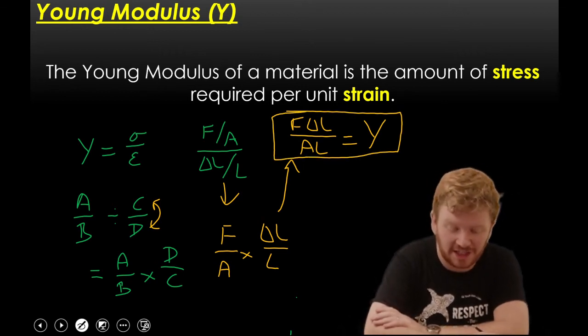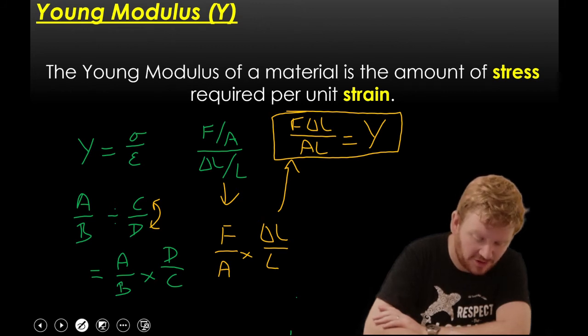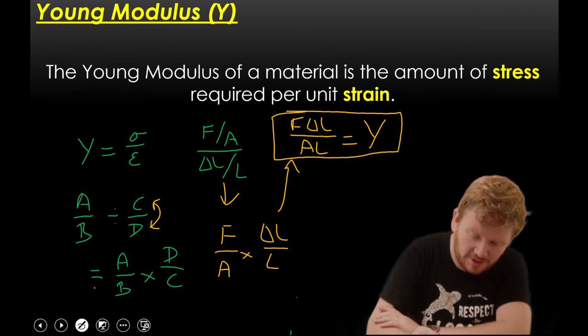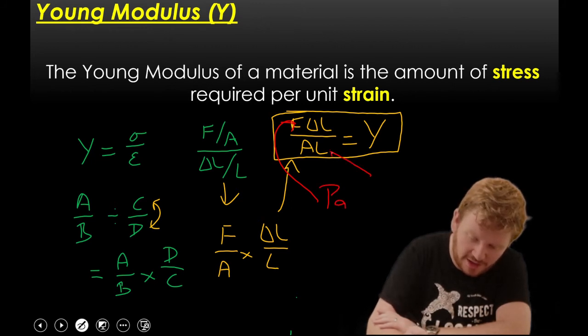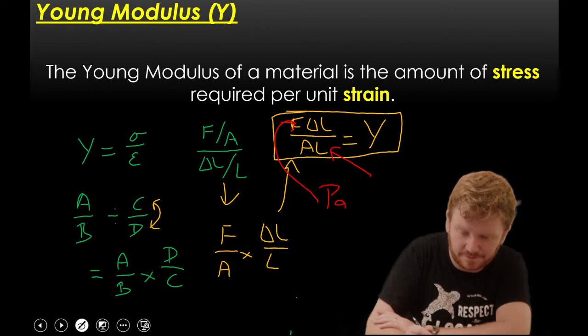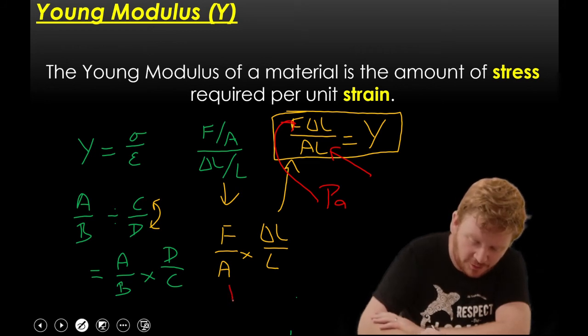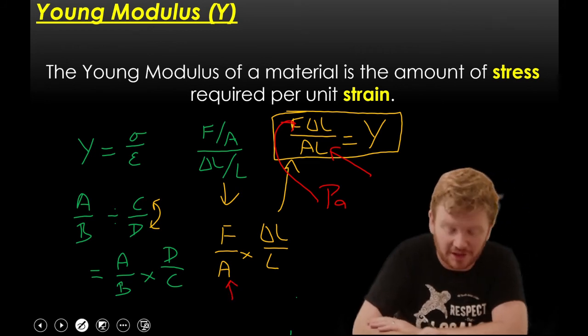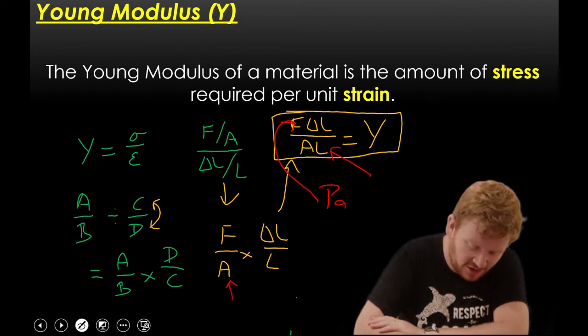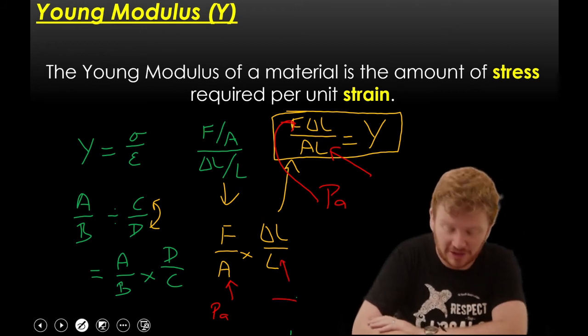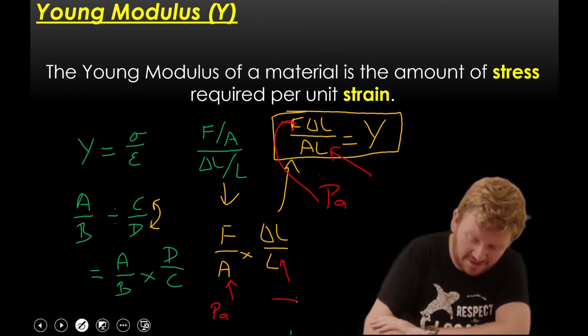Now, if we think about our dimensional analysis, we found on the previous slide that we measure F over A, which is sigma. F over A has the units of Pascals. And delta L over L is still dimensionless. There has no units, because it's still a meter over a meter. So, we have the unit of Pascals for it.